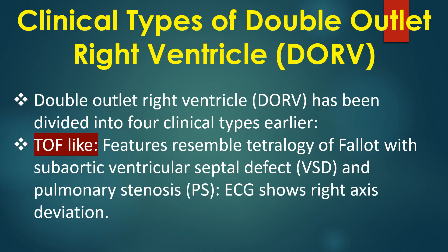The TOF-like type features resemble tetralogy of Fallot, with VSD and pulmonary stenosis. ECG shows right axis deviation.